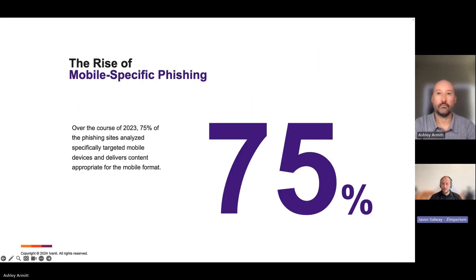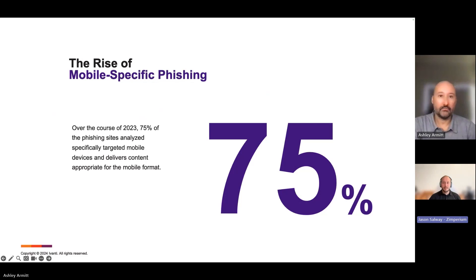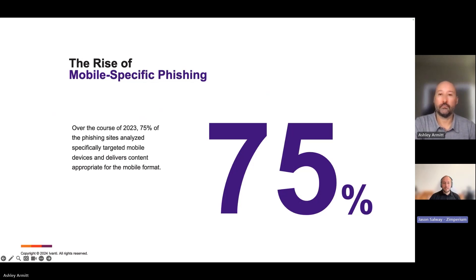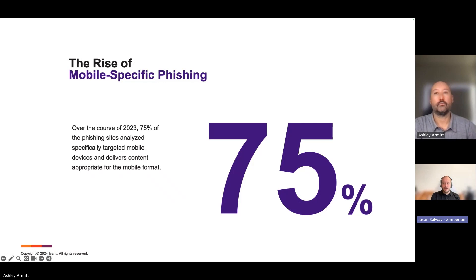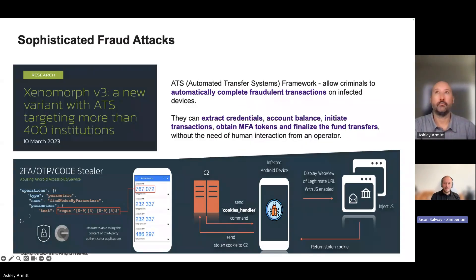Phishing is a big problem on mobile — and we're not just talking about email. We're talking about SMS, Facebook Messenger, Signal, Telegram, or push notifications from rogue apps you've installed. The overall stat is 75% of all phishing is now tailored to mobile devices, including SMS filtering. Attackers know they can be more successful because it's harder to spot a phishing attack on a mobile device — it's much easier to get someone to click a link on their phone.